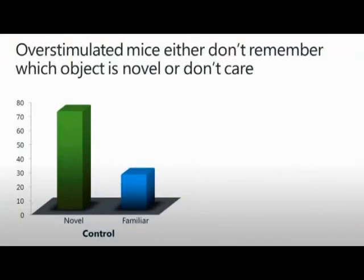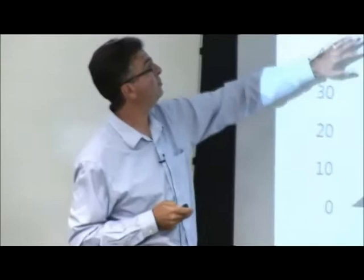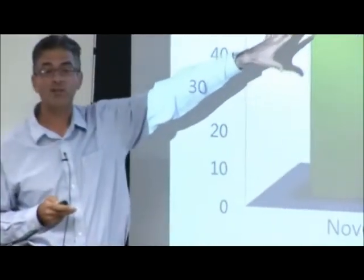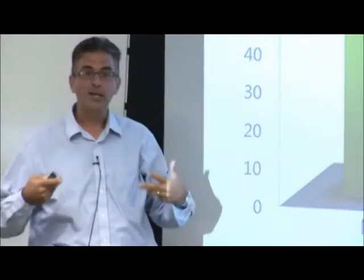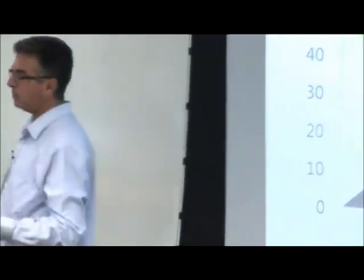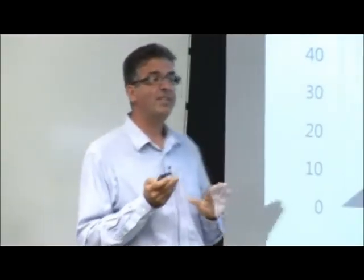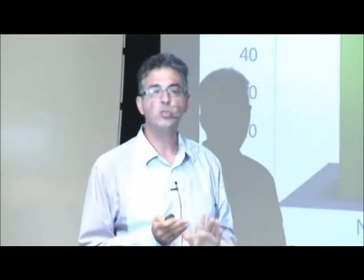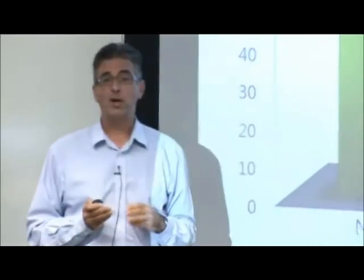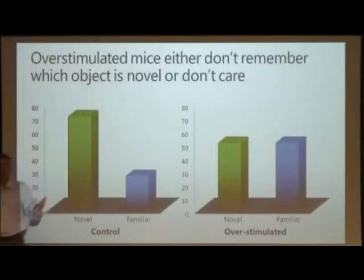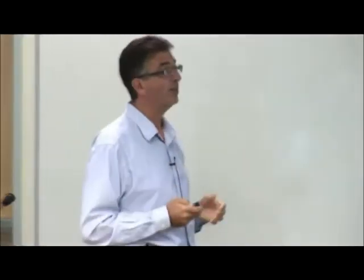And what we found in our experiments is that the control mouse, the normal mouse, as we would predict, spends 70% of its time on the novel object and 30% on the familiar. So it cognitively is aware of the fact that this is new and that's not. But look what our overstimulated mice do. 50-50, exactly the same amount. So it's either as if they cannot recognize a novel object, they have very impaired short-term memory or they don't care at all. But all I can say is that they are not behaving like normal mice do. And you know, is that a problem for a mouse? I don't know. I think in theory there's some advantage to being able to have short-term memory, even if you're a mouse, certainly if you're a human.